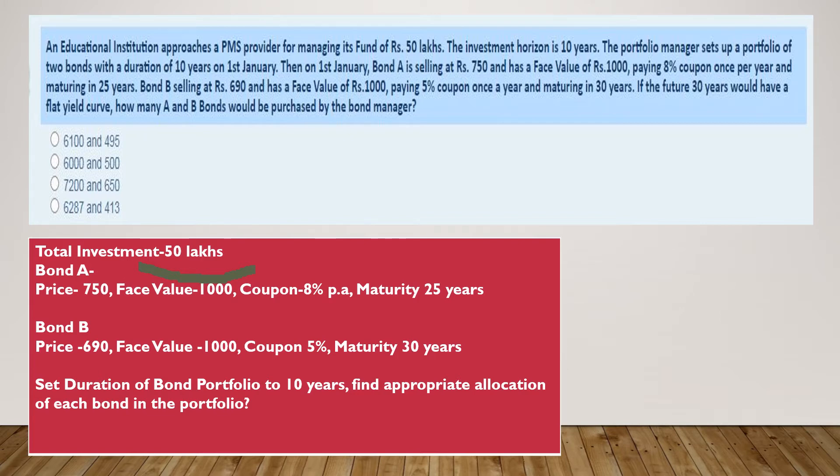The duration of both the bonds have to be set for 10 years. On first January, Bond A is selling at Rs. 750 with a face value of 1000, paying coupon of 8% per annum and maturing in 25 years.